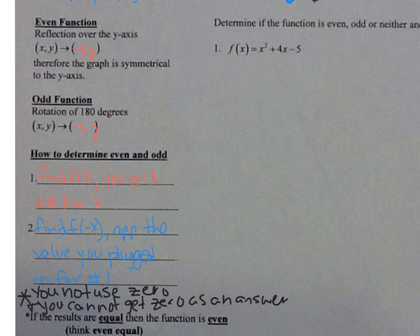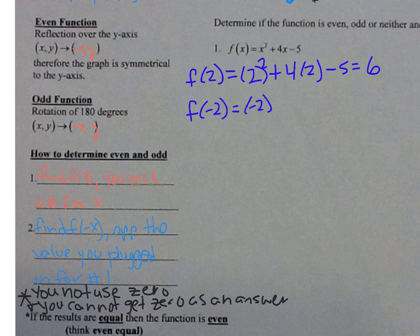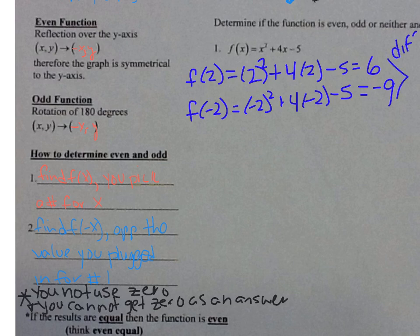Let's look at number one: f(x) = x² + 4x − 5. Pick any number — let's try f(2). So it's 2² + 4(2) − 5; plug it into your calculator and you get 6. Now do f(negative 2): (negative 2)² + 4(negative 2) − 5; plug it in and you get negative 9. These are different — not the same and not opposites.